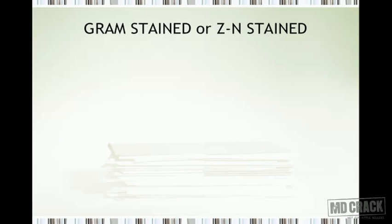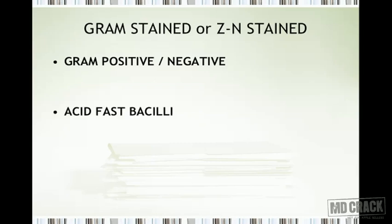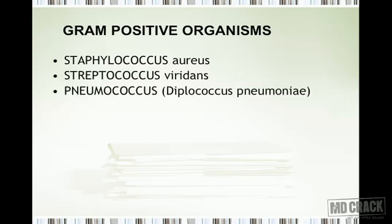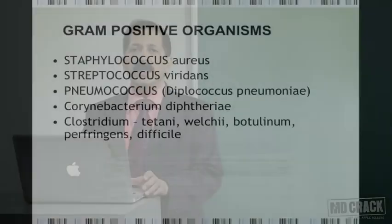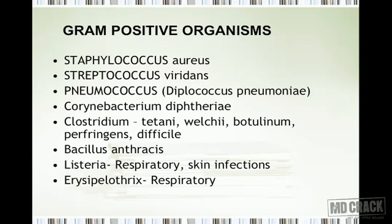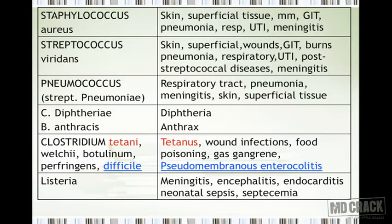Bacteria can be stained by Gram staining or acid-fast staining (Ziehl-Neelsen staining), giving gram-positive or gram-negative organisms, or acid-fast bacilli such as Mycobacterium tuberculosis and Mycobacterium leprae. Now looking at gram-positive organisms, the list includes: Staphylococcus (especially S. aureus), Streptococcus viridans, Pneumococcus (Diplococcus pneumoniae, a type of Streptococcus), Corynebacterium diphtheriae, Clostridium (welchii, tetani, botulinum, perfringens, and difficile), Bacillus anthracis, Listeria, and Erysipelothrix.